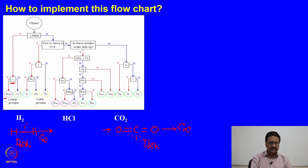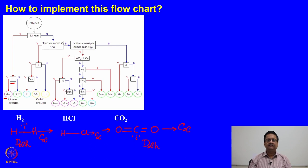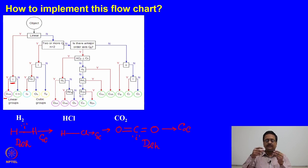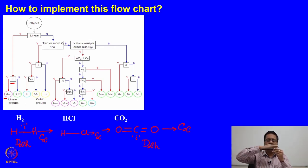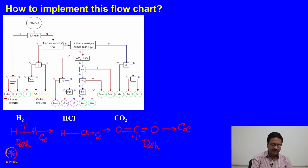In between, we have HCl, which is although linear and although it contains the C∞ axis like the other two molecules, it does not have the inversion center. What does it mean? It means that i is missing, and once the i is missing, we consider whether it has infinite number of σv's containing the axis of symmetry, which this molecule has. Therefore, the point group of this molecule is C∞v.